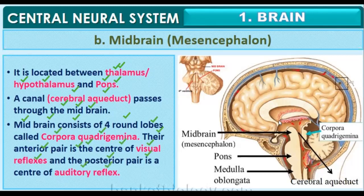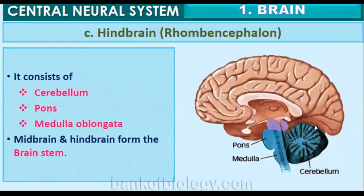The anterior part of the midbrain is responsible for vision, and the posterior part of the midbrain is responsible for audition. The last part of the brain is the hindbrain, which consists of the cerebellum, the pons, and the medulla oblongata.